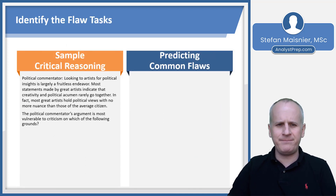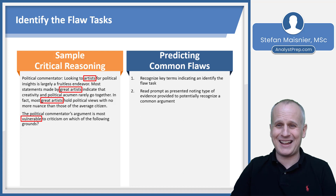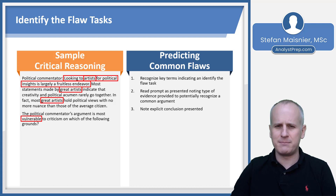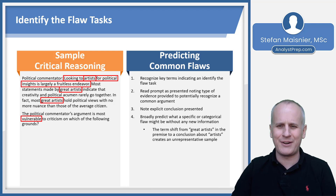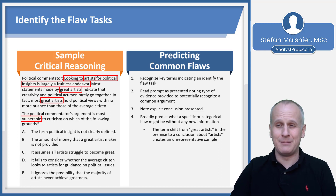Let's take a look at an example. The task reads: 'The political commentator's argument is most vulnerable to criticism on which of the following grounds?' We recognize the word vulnerable — this is a flaw task. The political commentator states: looking to artists for political insights is largely a fruitless endeavor. Most statements made by great artists indicate that creativity and political acumen rarely go together. In fact, most great artists hold political views with no more nuance than those of the average citizen. We see that the conclusion talks about artists generally, but the evidence is exclusively about great artists — that term shift creates an unrepresentative sample.